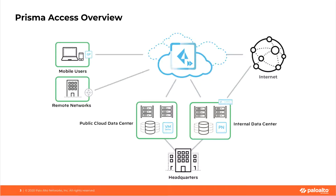Prisma Access is a cloud service provided by Palo Alto Networks. This service provides secure access to the internet and to business applications that may be hosted in SaaS, a corporate headquarters, data center, or instances that you may have running inside of public cloud.